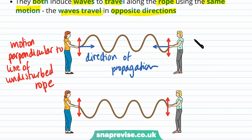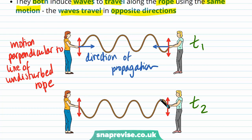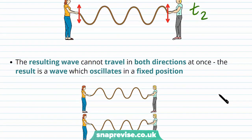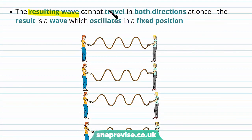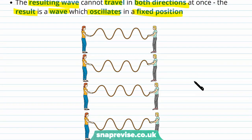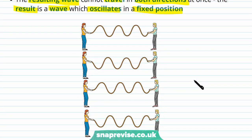We can see the waves at time t1 and time t2. At t1 we have a peak, at t2 we have a trough, and vice versa. The two people are causing the rope to oscillate up and down. The resulting wave cannot travel in both directions at once — the result is a wave which oscillates in a fixed position.